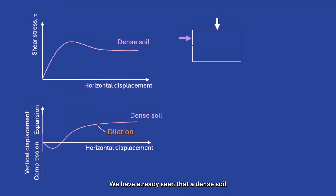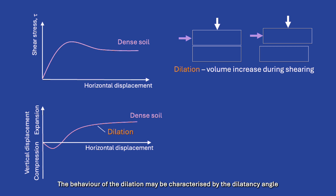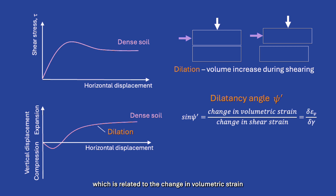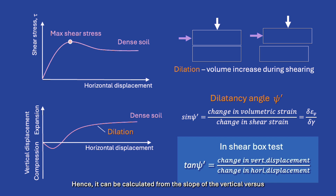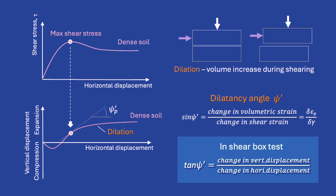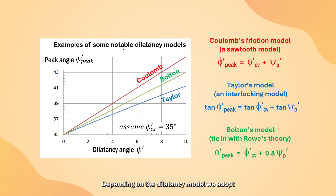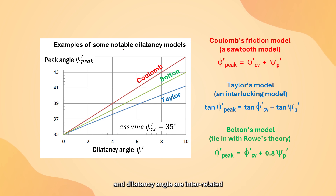Dense soil under not very large vertical stress will dilate during shearing. The behavior of dilation may be characterized by the dilatancy angle, which is related to the change in volumetric strain to the change in shear strain. In the direct shear test, this angle under peak shear stress can be easily obtained from the slope of the vertical and horizontal displacement curve at the point of peak shear stress. The peak friction angle, critical state friction angle, and dilatancy angle are interrelated depending on the dilatancy model adopted.